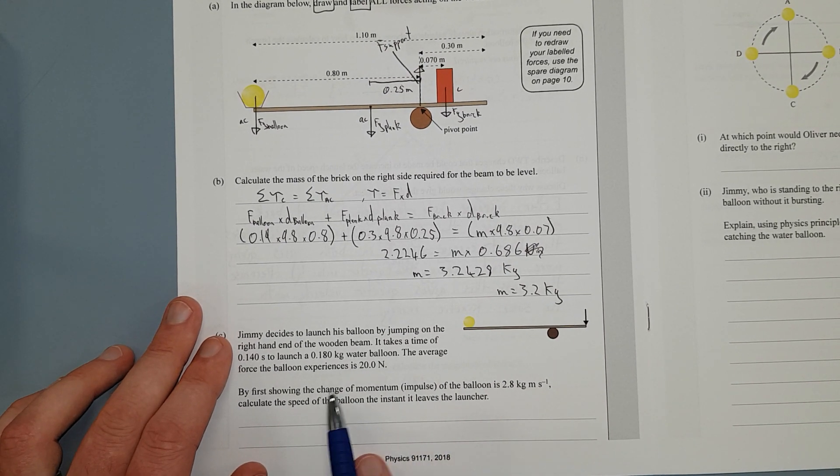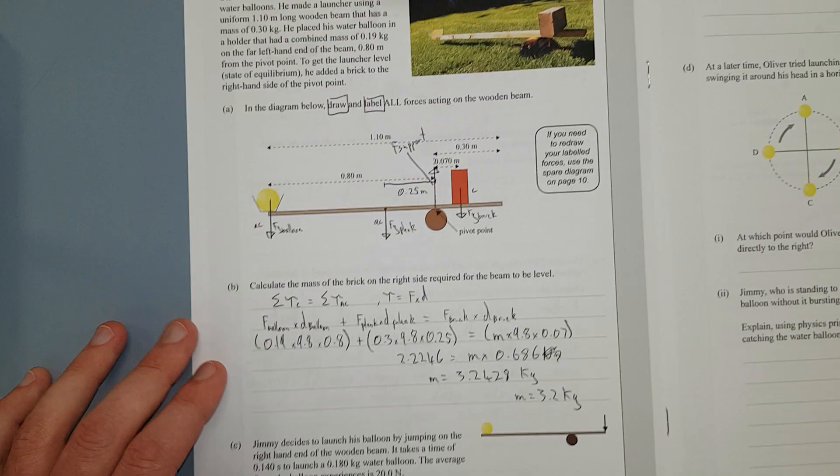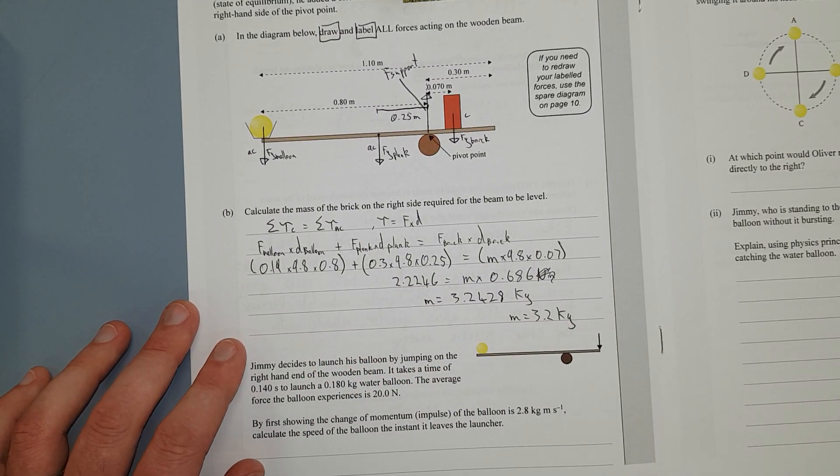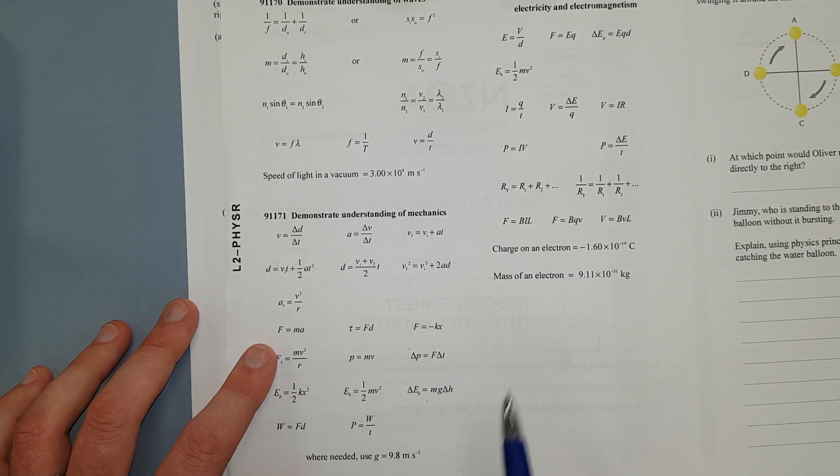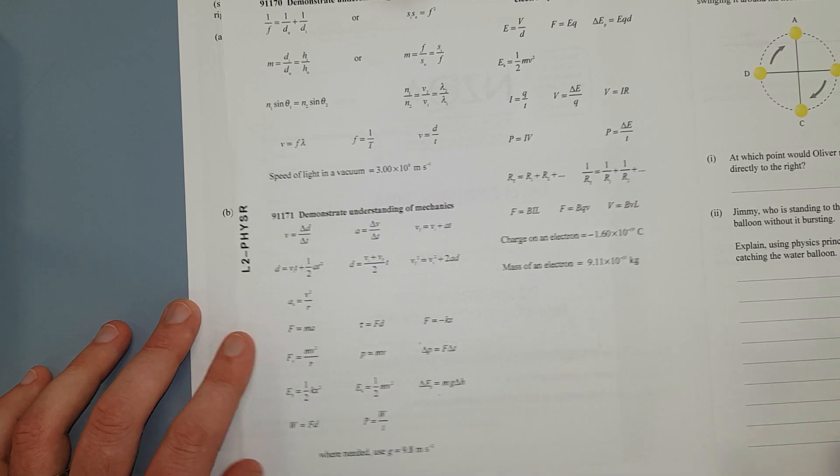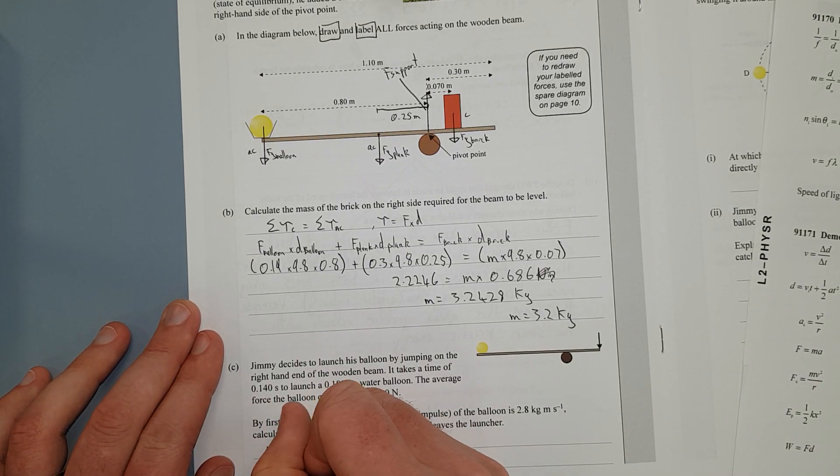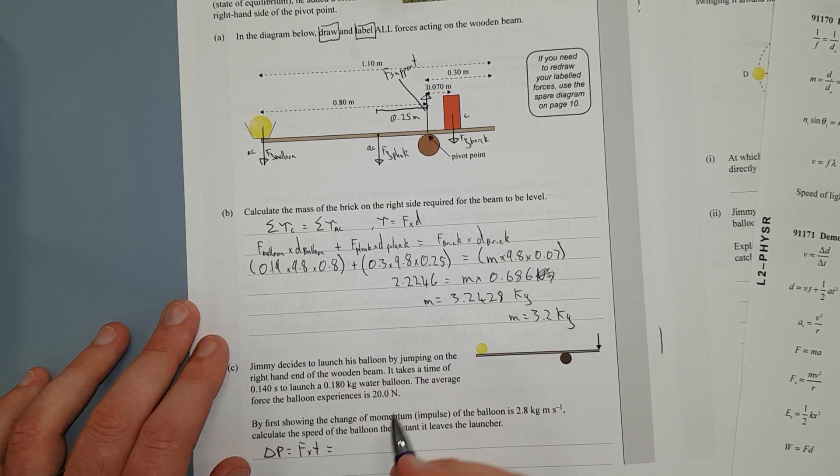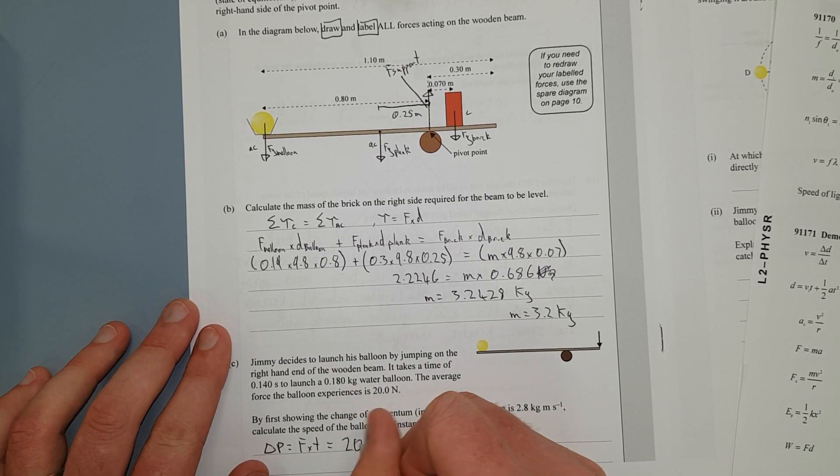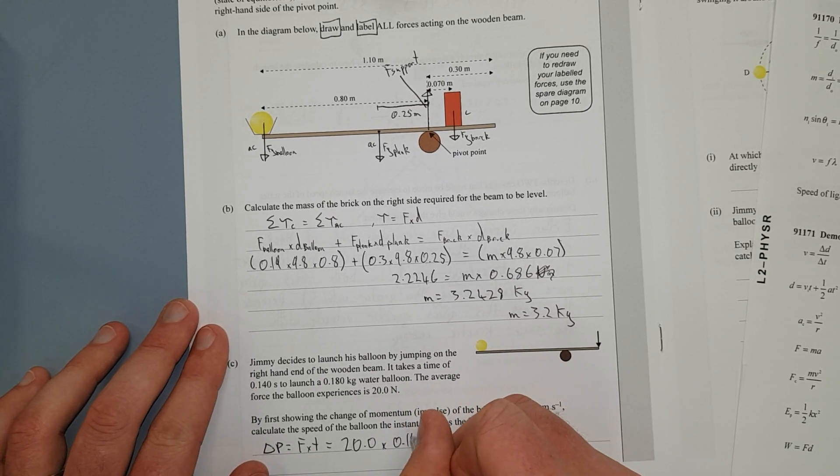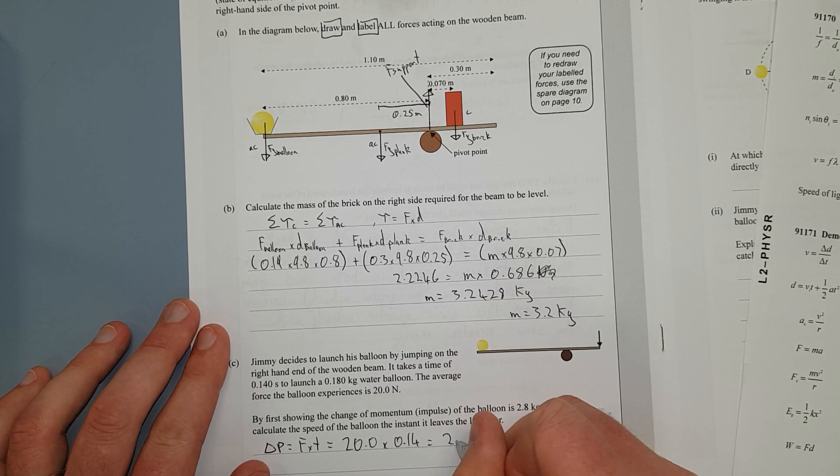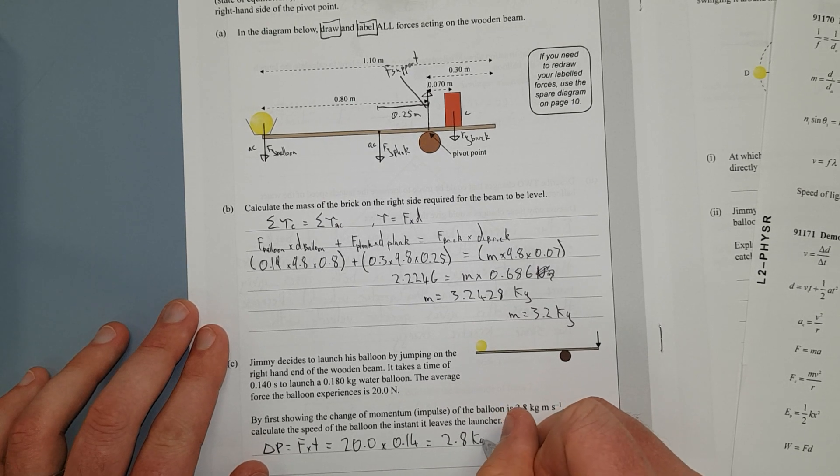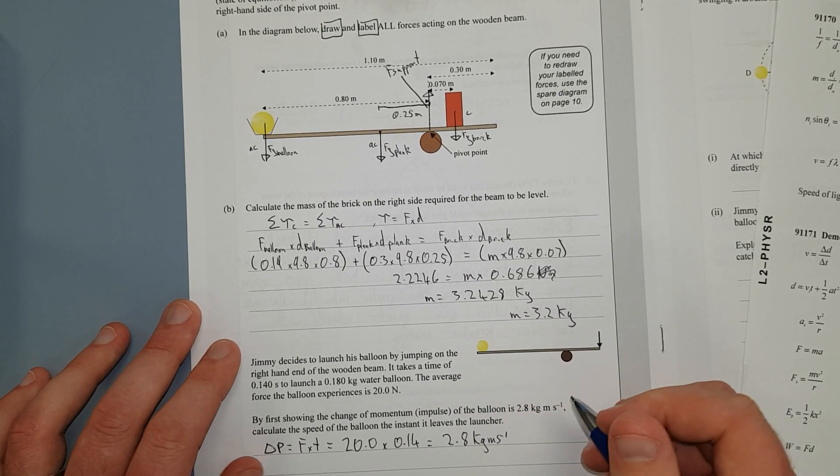Right, but first, showing the speed of the change of momentum and impulse of the balloon. Calculate the speed of the balloon that instantly leaves the launcher. You've got room over here, but I can do this in two lines. Right, on your formula sheet you have change of momentum equals the force times the time, so let's just write that in: change of momentum equals force times time, which is going to equal the force is 20 newtons, the time that occurs is 0.14, and that does in fact equal 2.8 kg meters per second. Right.